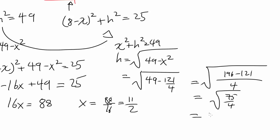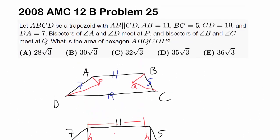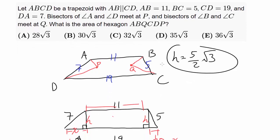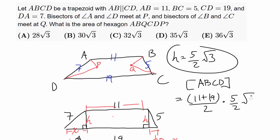So h = √(75/4) = (1/2)√75 = (5/2)√3. Let me write that down because it took quite a bit to find — the height of the trapezoid is (5/2)√3. Now let's find the area of the trapezoid: (11 + 19)/2 × height = 15 × (5/2)√3 = (75/2)√3. So we know the area of the trapezoid. All we have to do is find the area of the two small triangles and subtract them out.